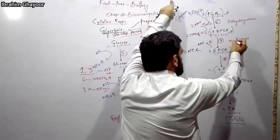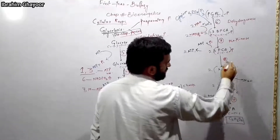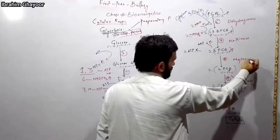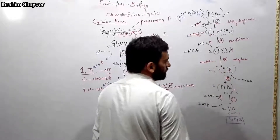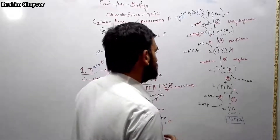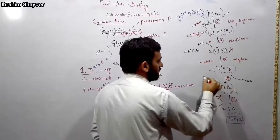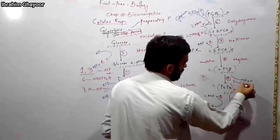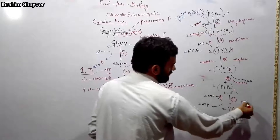PGA kinase is used for the ATP-producing step. The enzyme for the isomerization reaction in step 8 is mutase — mutase catalyzes the mutation/isomerization reaction. The enzyme for step 9 (dehydration) is enolase. The enzyme for step 10 is also a kinase enzyme.